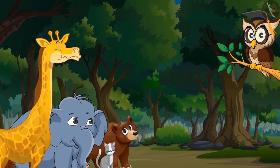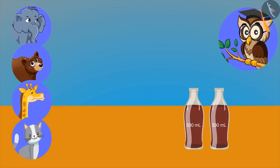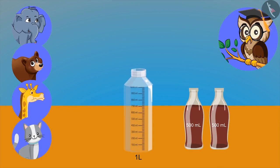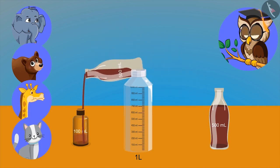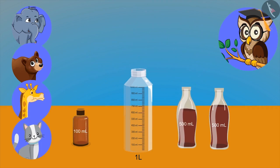Very good, kids. Sir, please show some more examples. Look, I have two bottles of cold drink and these empty bottles of one litre and one hundred millilitres. Now try to pour this cold drink into the empty bottle. We cannot put five hundred ml into a one hundred millilitre bottle.